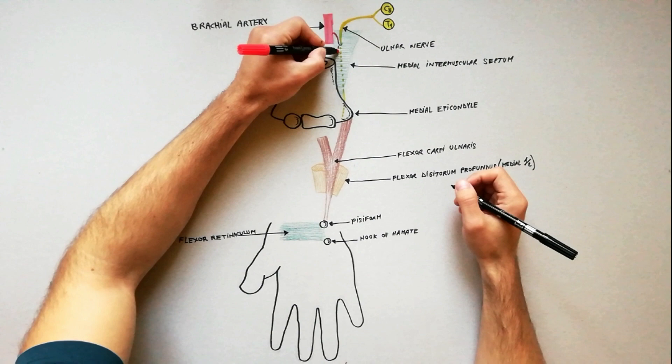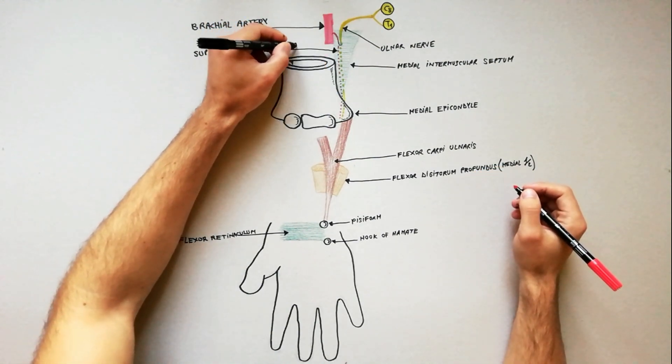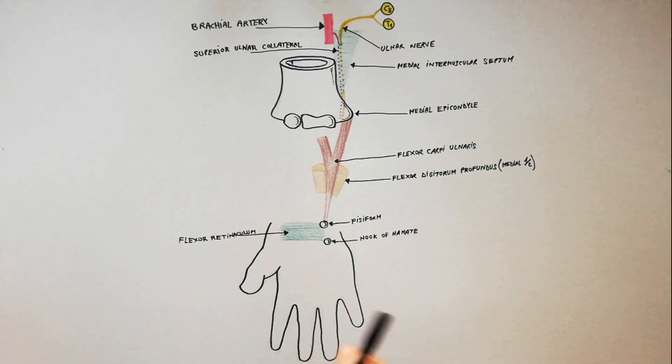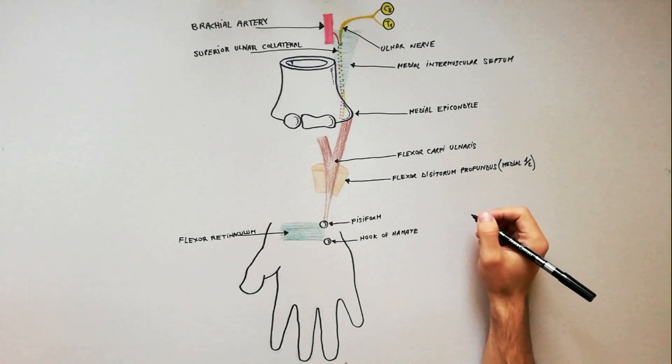It is accompanied by the superior ulnar collateral artery, a branch of the brachial artery. The ulnar nerve does not give any branch in the axilla and in the arm.